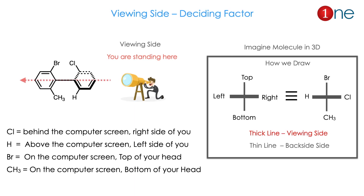The important deciding factor is the viewing side. You have to master the viewing side. Viewing side means you are looking at the molecule from a particular angle. Here I show a man standing near the molecule — you have to identify which is right side, which is left side, which is top, and which is bottom. Here, right side is chlorine, left side is hydrogen, top is bromine, and bottom is CH3. How we represent it on paper: the thick line is the viewing line, the thin line is the back side. We write it like tetrahedral carbon, with right side, left side, top, and bottom. You have to master the viewing side.